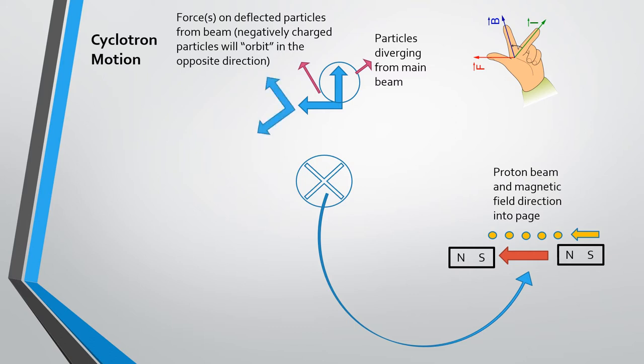And as shown here, will produce a net circular motion around the beam and around the magnetic field.